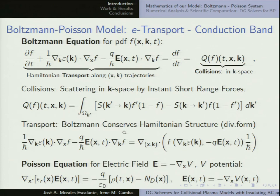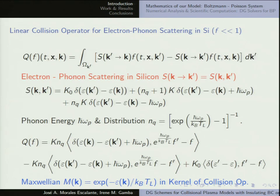The transport part is pretty much a Hamiltonian system — very well studied. You have the electric field as the force. It's also coupled to the Poisson equation because when you have this electric field the charges move, they change their position, that changes the density, and that also changes the self-consistent part of the potential, which changes the electric field. So you can see it has a lot of similarities with the models used in plasmas.